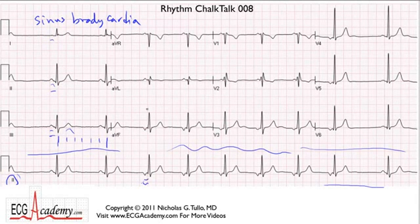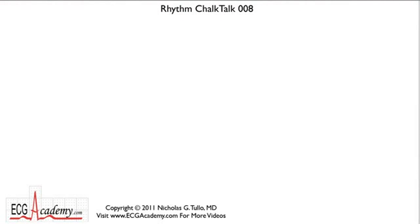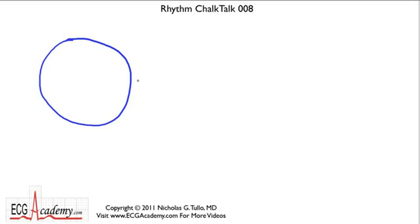Now let's talk about this P wave. It is not only inverted in lead 2, but also inverted in AVF, yet it happens to be upright in AVL — which makes you think it is headed from right to left. To understand this, let's review what axis is all about. Axis has to do with the frontal plane and the limb leads. We can divide up this 360-degree circle into equal parts.